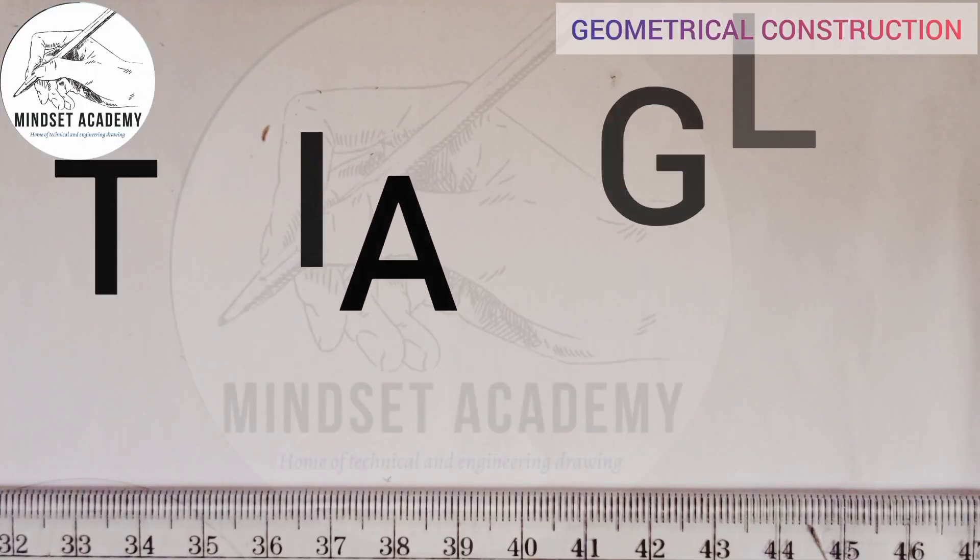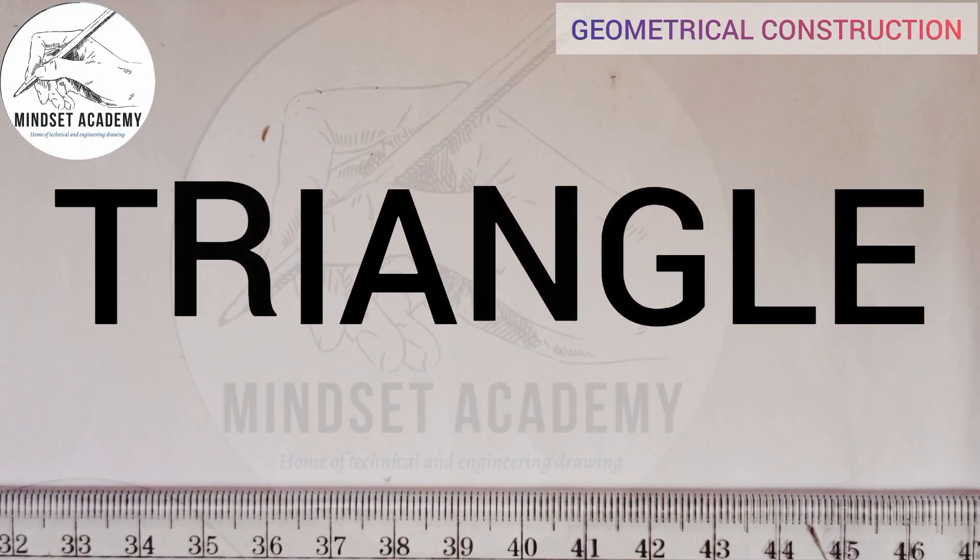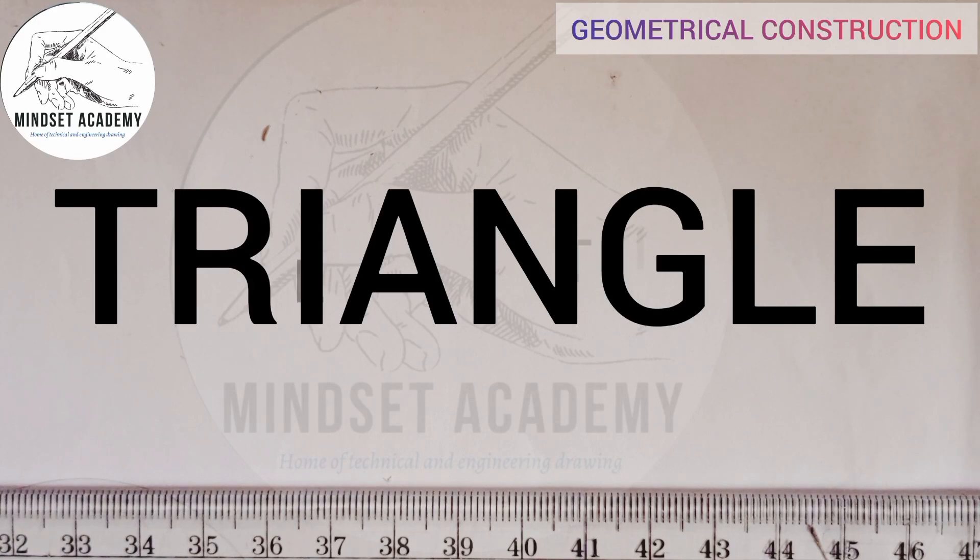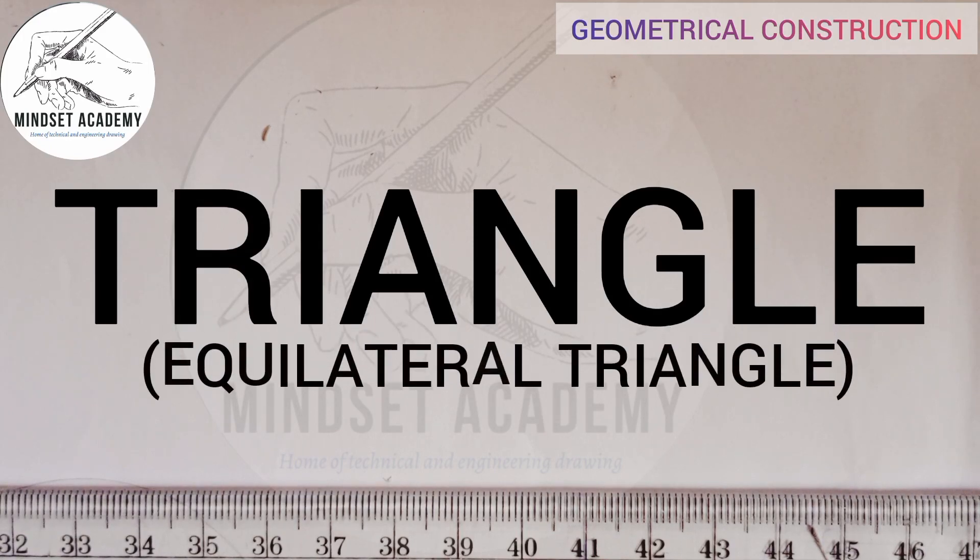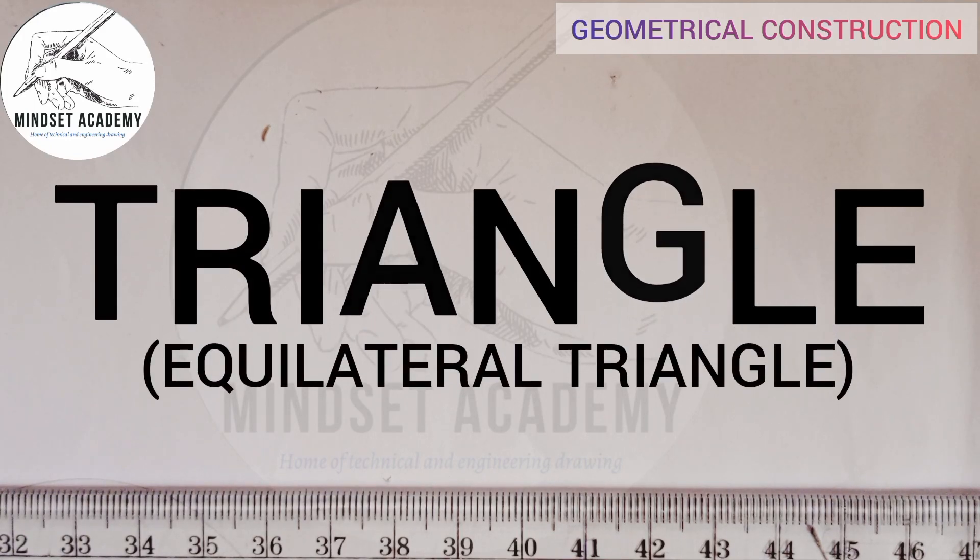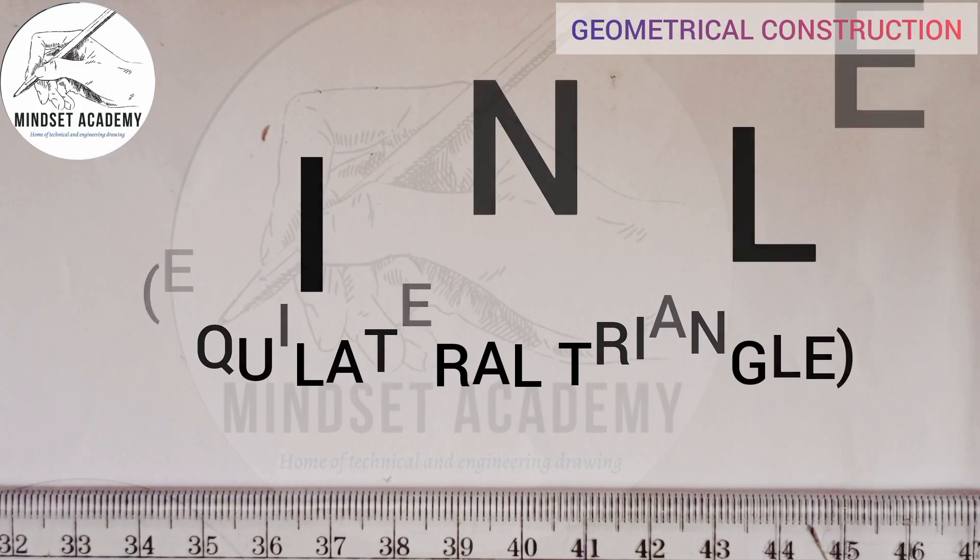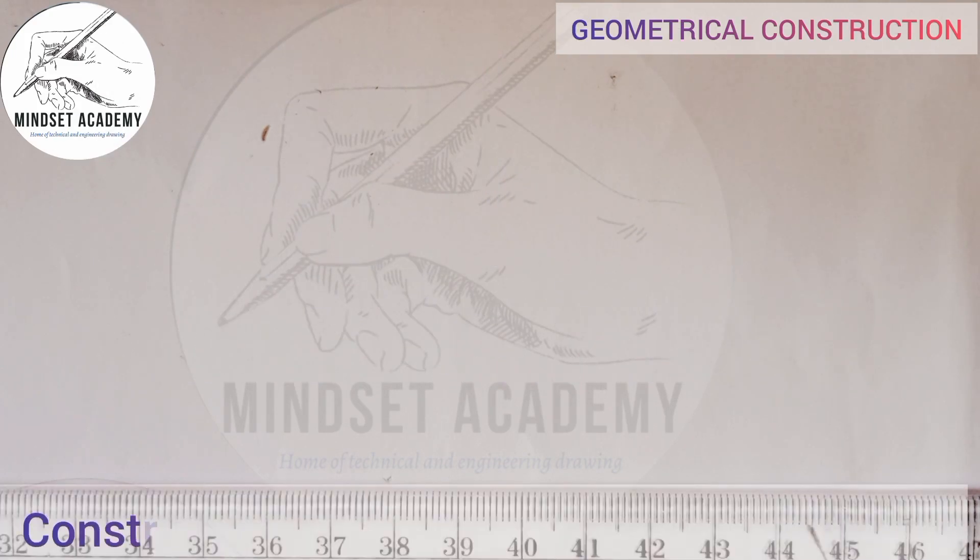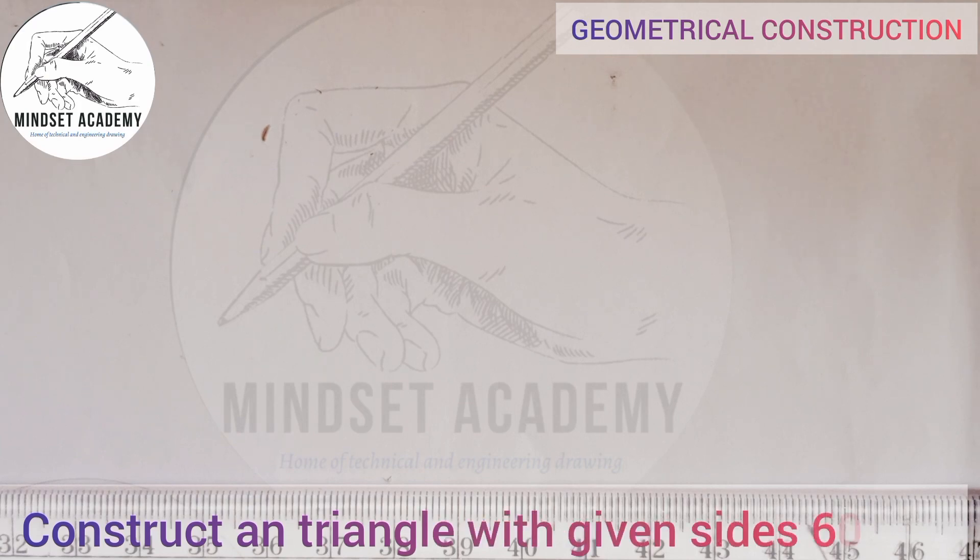Welcome to my channel Mindset Academy. In this video we want to construct a triangle, but today we'll be constructing an equilateral triangle. The question says construct an equilateral triangle given side 60 millimeter. We know an equilateral triangle has all its sides and angles equal.